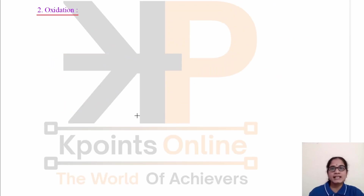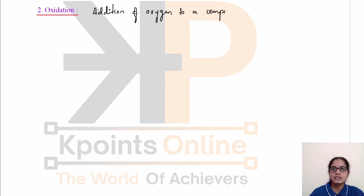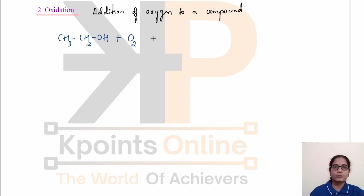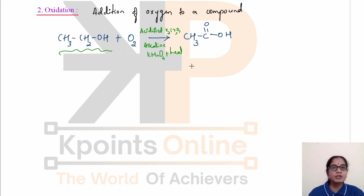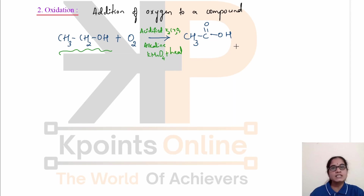The next type of reaction that carbon compounds undergo is oxidation. Oxidation is the addition of oxygen to a compound. When this alcohol is oxidized, we get carboxylic acid. For this oxidation, we need oxidizing agents — reagents capable of adding oxygen to the compound. Initially the compound had one oxygen atom; in the product it has two oxygen atoms. So there is addition of oxygen, which is why we call it an oxidation reaction.